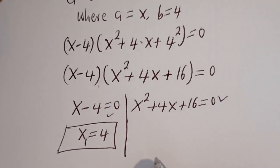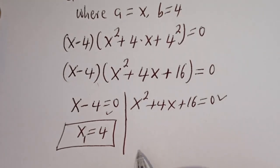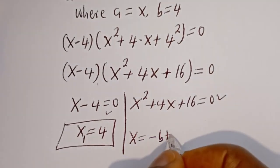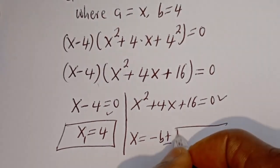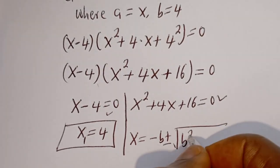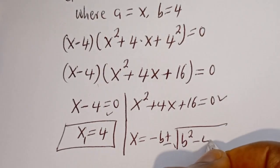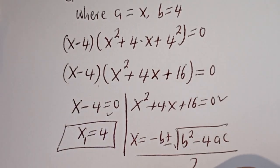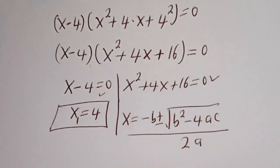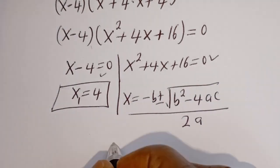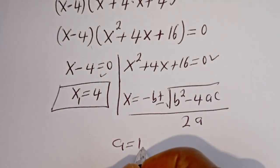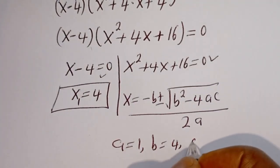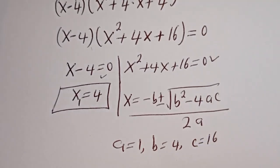From the second case, this is a quadratic equation. Let's solve this using the quadratic general formula: s is equal to minus b plus or minus square root of b squared minus 4ac, over 2a. From this equation, a is equal to 1, b is equal to 4, c is equal to 16.